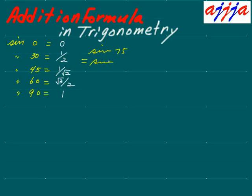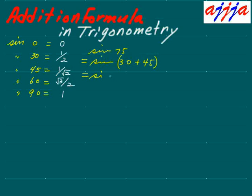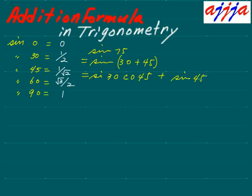Sine seventy-five means sine thirty plus forty-five. Sine forty-five. That means, using this addition rule — addition formula — in this case: sine thirty, then cosine forty-five, plus sine forty-five, you exchange forty-five and thirty, then cosine thirty.